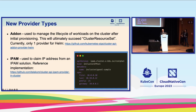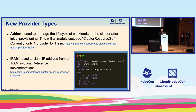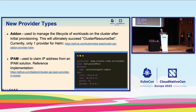More recently, CAPI has introduced two new provider types. When you provision a cluster, you often need to install certain workloads such as a CNI into the newly provisioned cluster. Previously the CAPI way to do this was using cluster resource sets, but there are some limitations. A new, more extensible way has been introduced: the add-on provider. There is currently only one add-on provider — for Helm — but more will be coming.